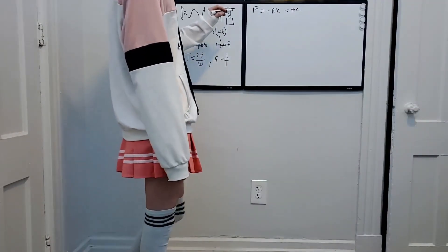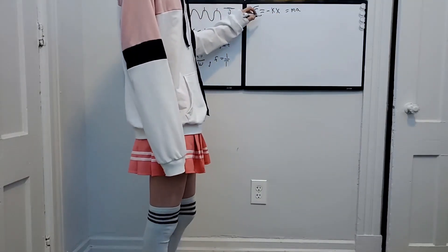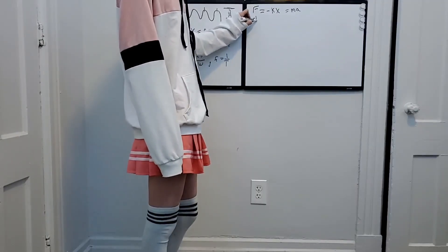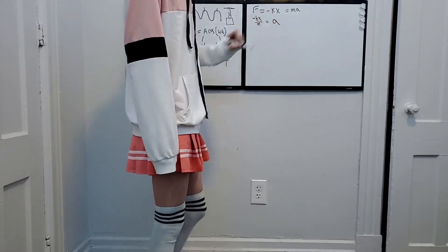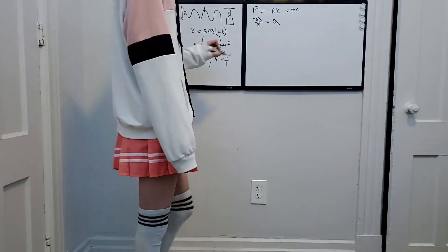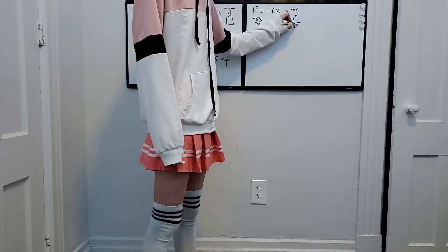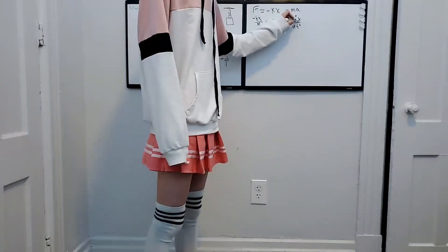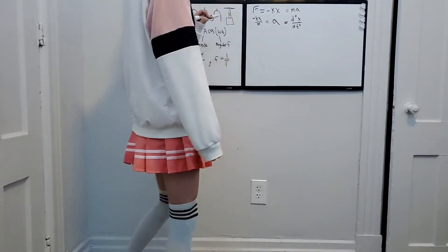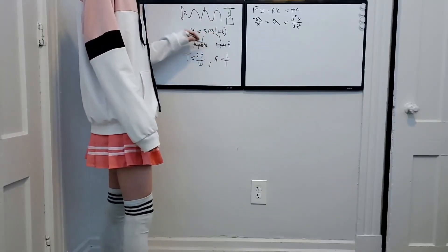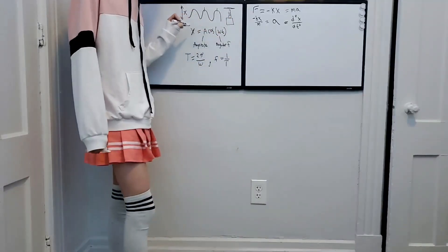We can solve for our acceleration by writing negative kx over m — divide both sides by m and we get acceleration equal to negative kx over m. We also know that acceleration is equal to the second derivative with respect to time of x. Now this is interesting and especially useful, because we have an equation for x right here.